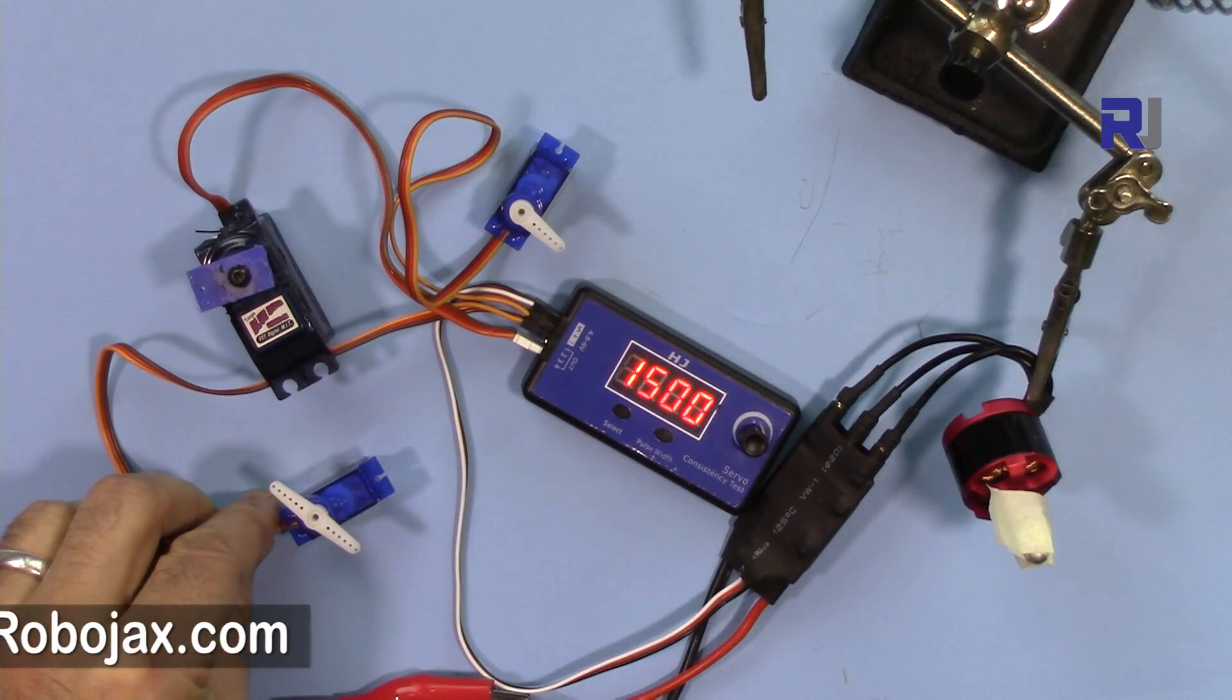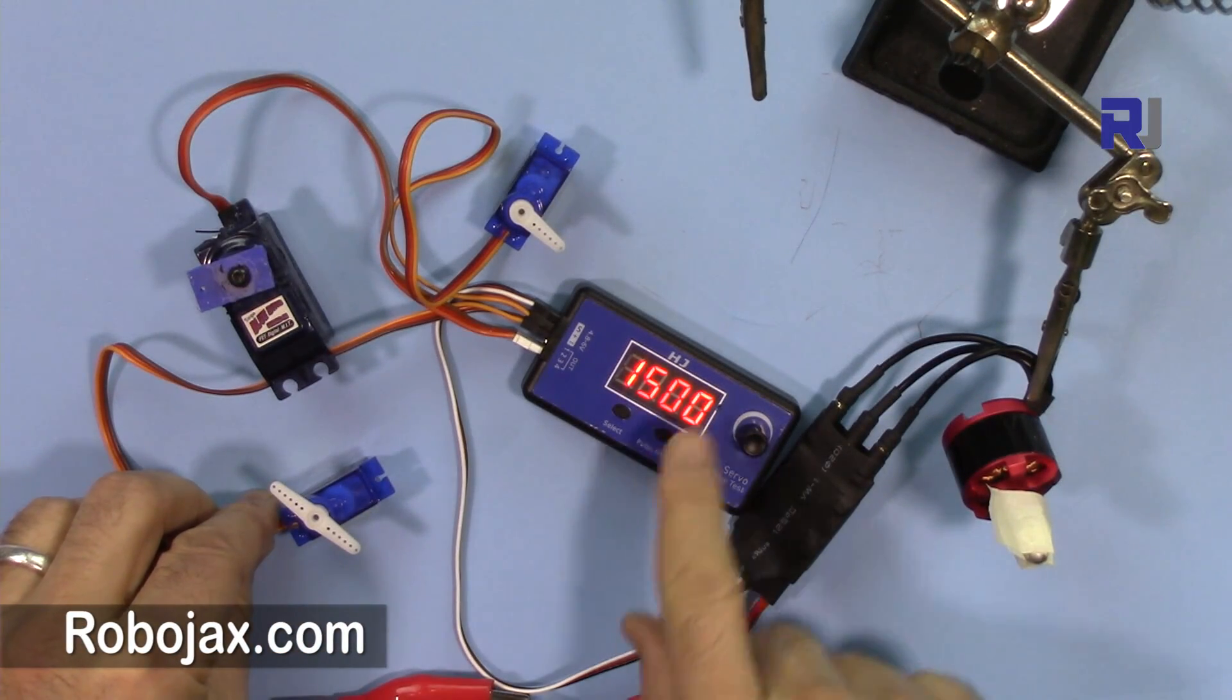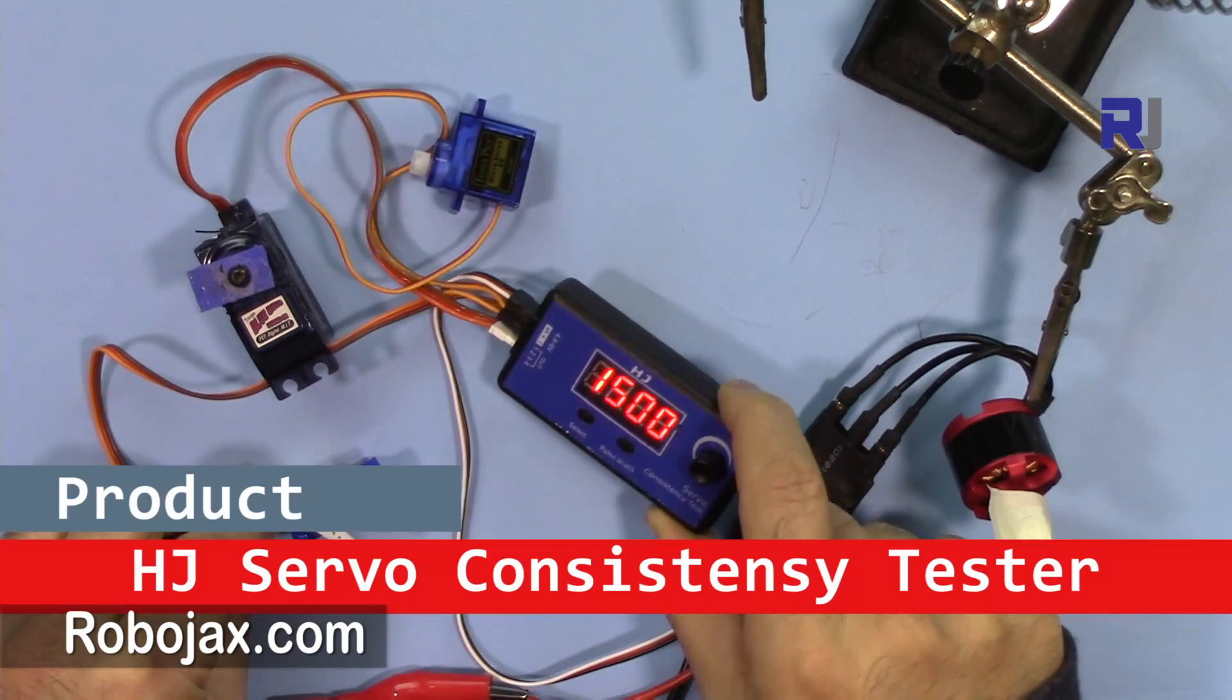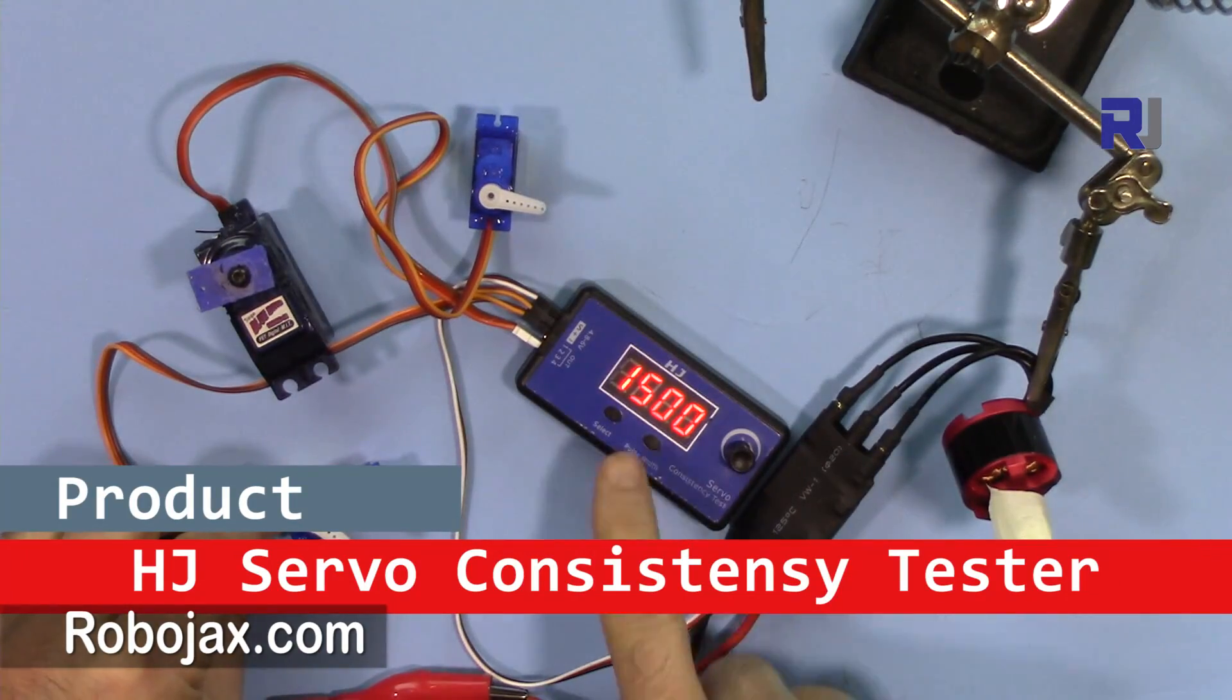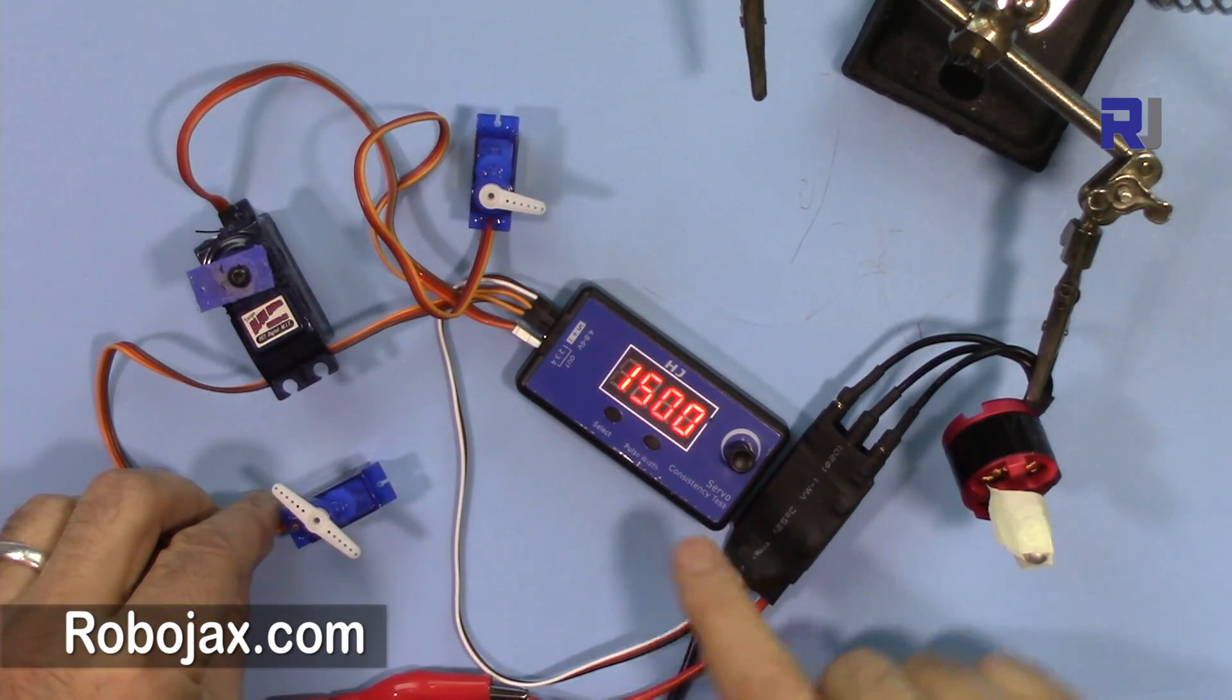Hi, welcome to Robojax. In this video I'm going to show you how we can use this HJ 4-channel servo consistency tester to see and test servo gear, servos, and also ESCs.